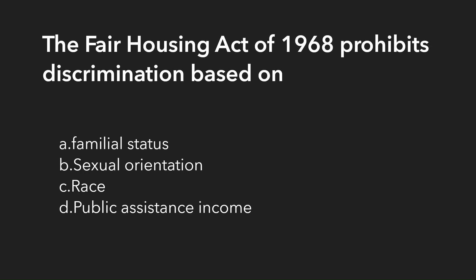Familial status came later in 1988, so that's not it. Sexual orientation is new on the federal level — Illinois has had it for a while, but not from 1968. Race was included back in 1866, so it's a potential answer. Public assistance income is also fairly new. Based on that, the only answer that makes sense is C, race.